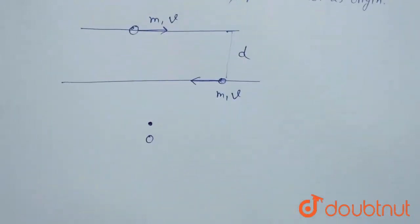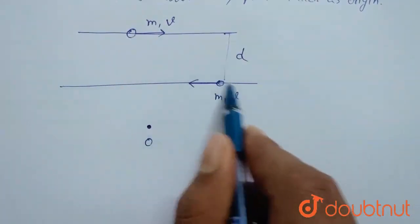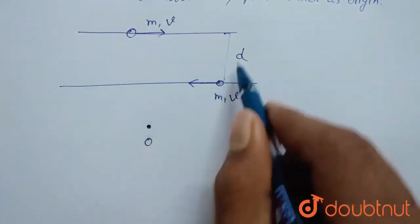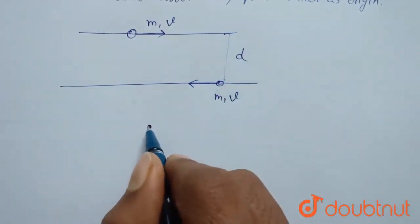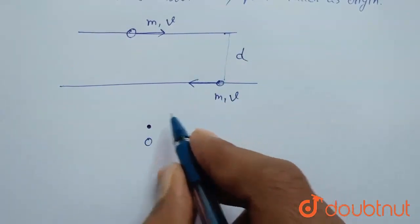I have drawn the diagram for that. This is the first particle which is moving in this direction and second is moving in opposite direction to that of first particle and separation between them is d. We have to find its angular momentum vector about any fixed point.